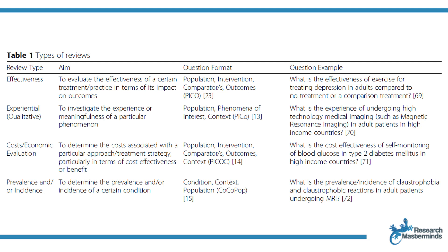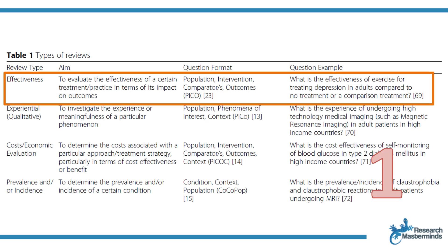All the different types of systematic reviews are listed and explained in Table 1 of the article. Let's briefly go through them. You'll also find references to more information in the article and in the JBI Manual for Evidence Synthesis — I'll leave a link to this resource in the description box as well. The most common type is the systematic review of effectiveness, which aims to evaluate the effectiveness of a certain treatment or practice on outcomes. An example research question: what is the effectiveness of exercise for treating depression in adults compared to no treatment or a comparison treatment?